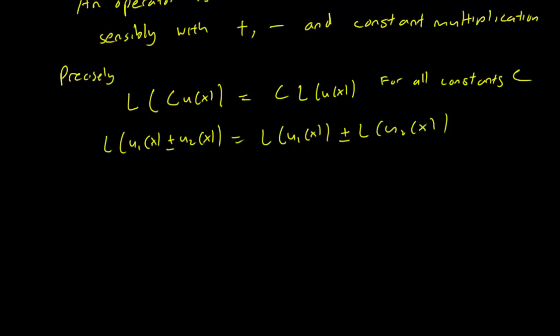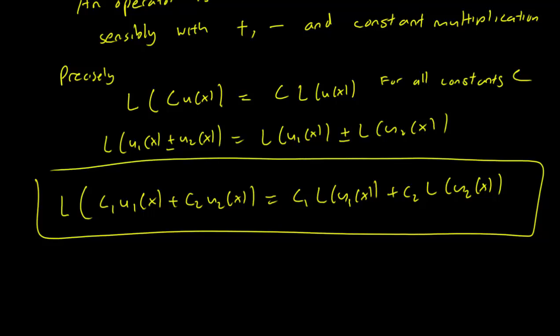And in particular, one important property is that L of a linear combination of two functions, c1*u1(x) plus c2*u2(x), you can write this down as c1*L(u1(x)) plus c2*L(u2(x)). So if you want to check for linearity, this is more or less what you're always checking for, that you can pull out constants and you can pull out plus and minus signs the way that you expect to do.